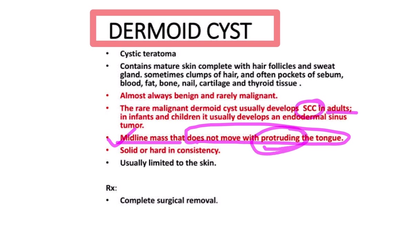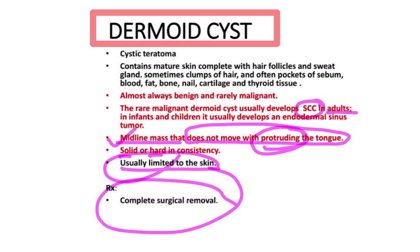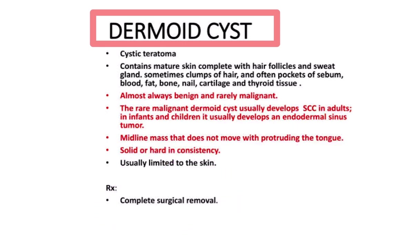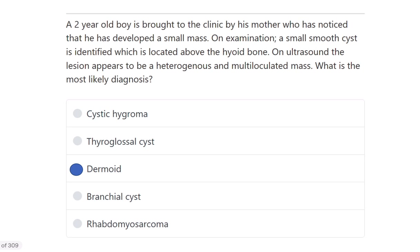If the mass moves with protrusion of the tongue, it is not a dermoid cyst — in that condition it would be a thyroglossal cyst. The dermoid cyst is solid and hard in consistency, usually limited to the skin. The treatment of the dermoid cyst is complete surgical removal.